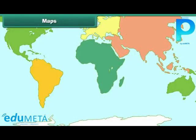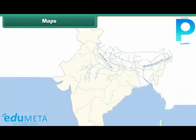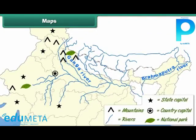A map represents some portion or all of Earth's surface diagrammatically. It shows countries of the world, their capitals, cities and towns. It also shows the various landforms and water bodies on Earth. Maps use pictures or signs to denote rivers, mountains, etc. Such pictures and signs are known as symbols.